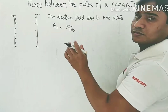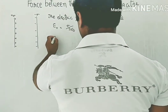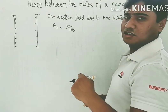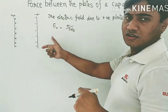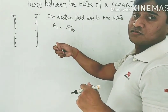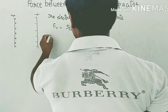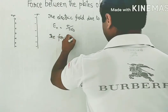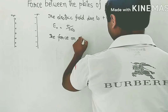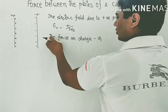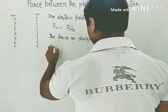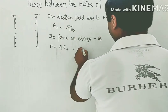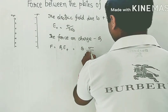The electric field due to the positively charged plate equals sigma by 2 epsilon naught. Since the electric field is uniform between the space bounded by the two parallel plates, we will directly calculate the force. We have the electric field and charges on the negative plate — let those charges be minus Q. So directly we go for force: the force upon charge minus Q, taking the magnitude, is F equals Q into E plus, which is Q into sigma upon 2 epsilon naught.